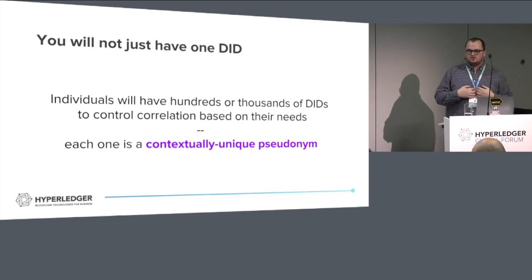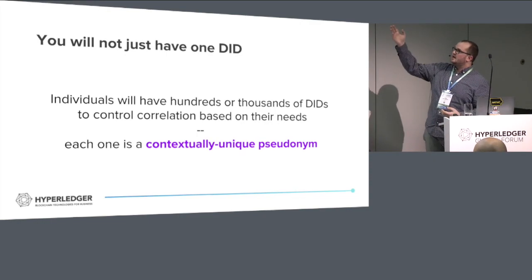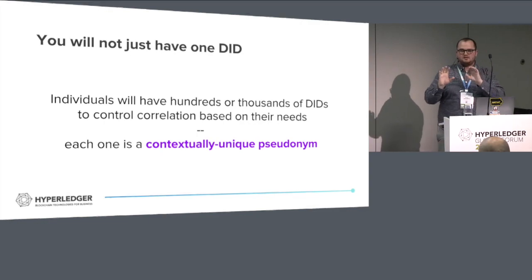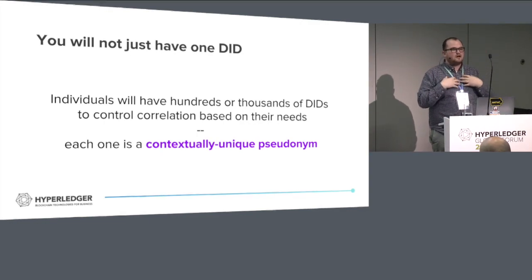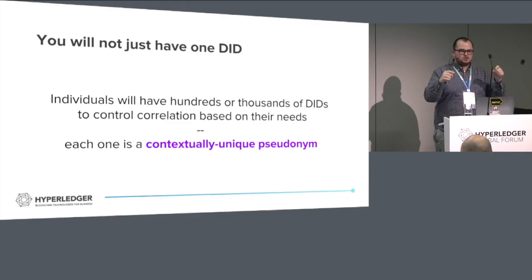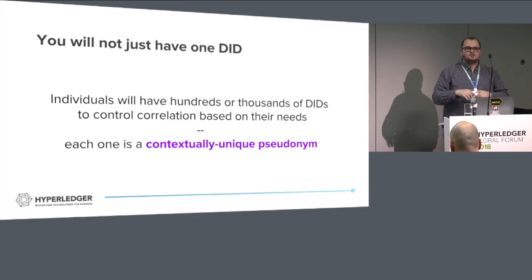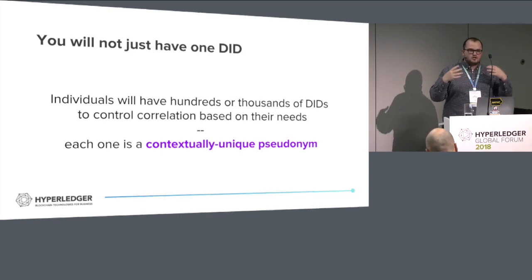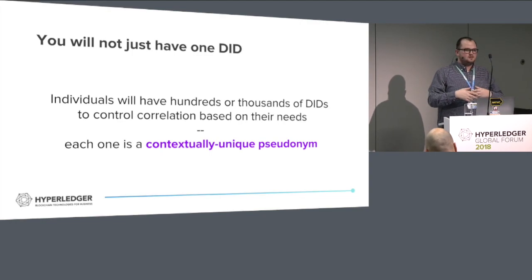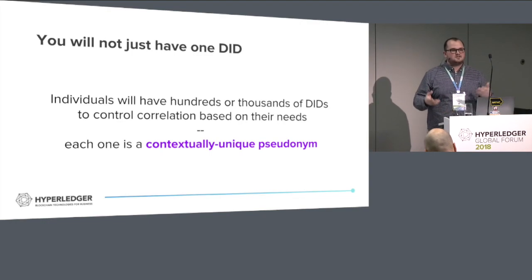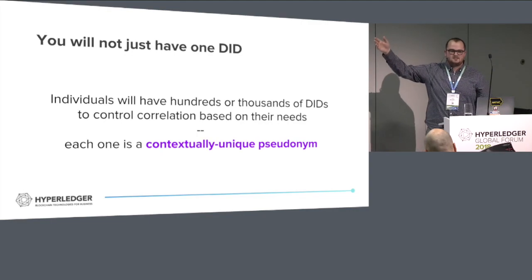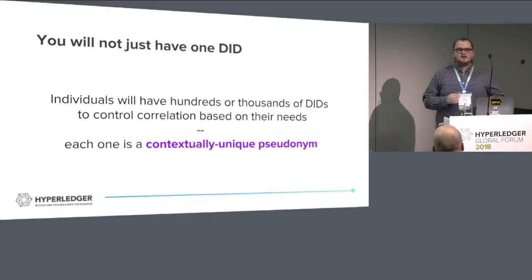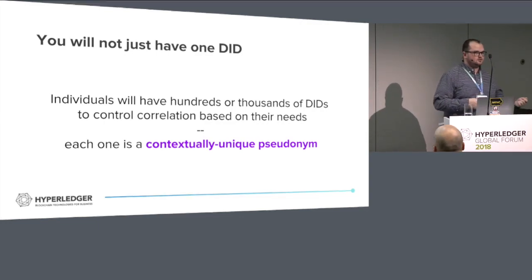To give context: I could have a DID for each individual in this room and control the amount of information I share with each of you individually. Or I could publish a single DID and you could all connect to me and identify me, then correlate information together without my knowledge. If I choose to share the same identifier with every single person here, I'm choosing to accept the risk that you can correlate certain information based upon that identifier. Contextually unique identifiers for each individual give much better privacy if you choose.